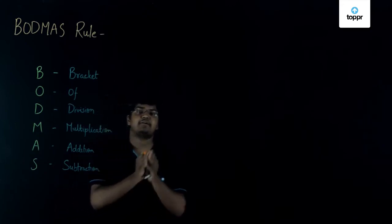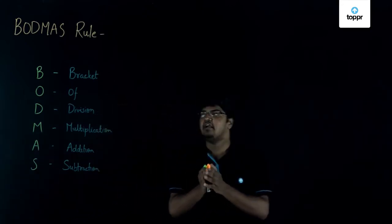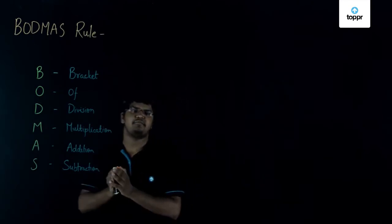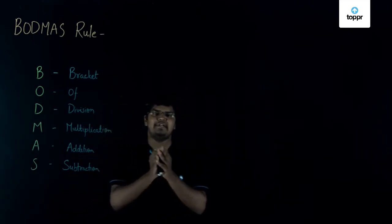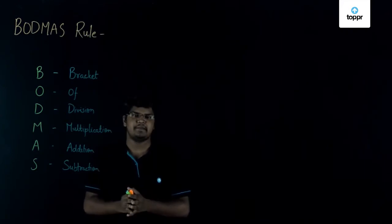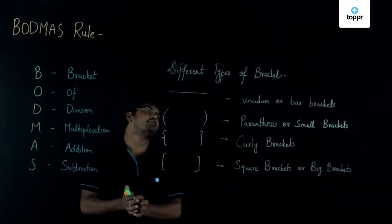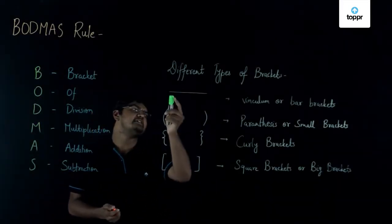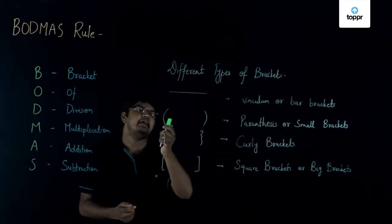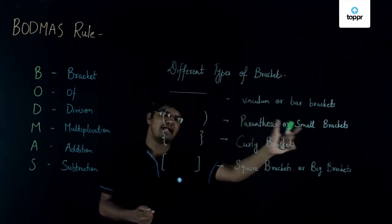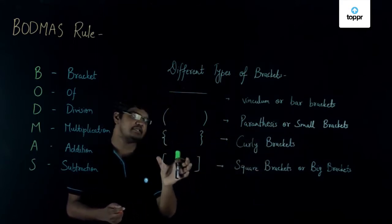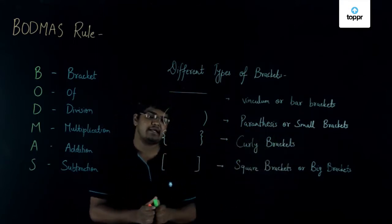Now, to simplify expressions, we'll first see how many different types of brackets there are, and then we'll discuss some problems based on the BODMAS principle. The different types of brackets are: first, the vinculum or bar brackets; second, the parenthesis or small brackets; third, the curly brackets; and fourth, the square brackets or big brackets.